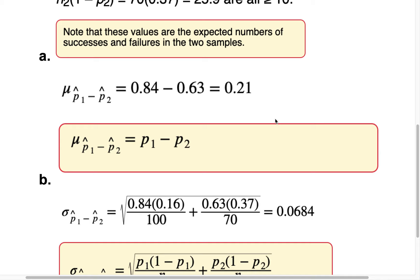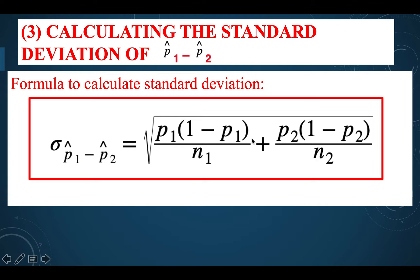That's it for this lesson. I find it to be kind of a review lesson — we're still finding center and variability, describing the same things we've been describing before. But in this case, we're using different types of data because we're taking the difference between two proportions. That'll be it for today's lesson.